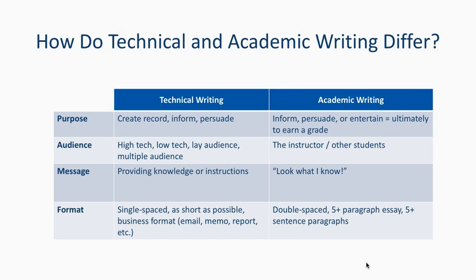Comparing technical and academic writing: the purpose is very different. Technical writing records information, informs, or persuades. Academic writing may also inform or persuade, but ultimately its purpose is to earn a grade — demonstrating the capacity to perform a skill or showing that knowledge has been learned.